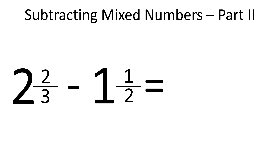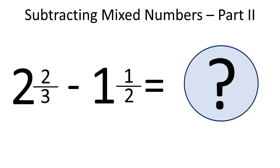We talked already about how to subtract mixed numbers with the same denominators. What about subtracting mixed numbers with different denominators? How much is 2 and 2 thirds minus 1 and 1 half?